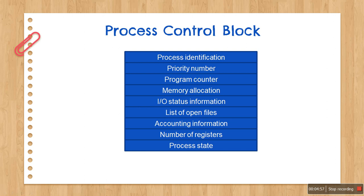Then you also have process state, which indicates which state the process may be in — new, ready, running, waiting, or terminated. These are the states we have discussed in the lecture on processes. If you have not watched that video, please watch it; the link is given in the description box below. When the process changes state, the operating system must update the information in the process's corresponding PCB.